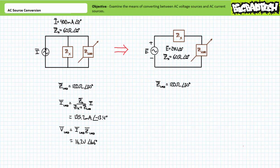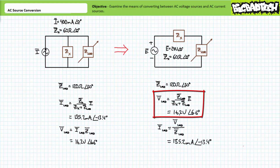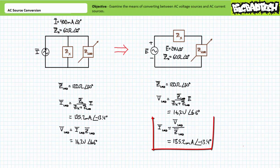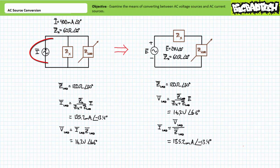Our substitute configuration is a perfect setup for the AC voltage divider rule. We know applied voltage and we know both impedances in a series combination of two elements. An application of the AC voltage divider rule demonstrates voltage across the variable load impedance will be 16.2 volts at an angle of 6.6 degrees. A subsequent application of Ohm's Law demonstrates current through the variable load impedance will be 135.2 milliamperes at an angle of negative 13.4 degrees. Equivalency has indeed been maintained and the load impedance is none the wiser.